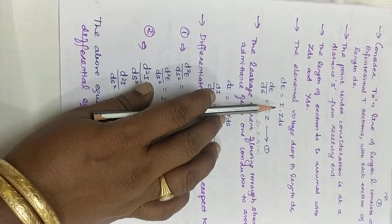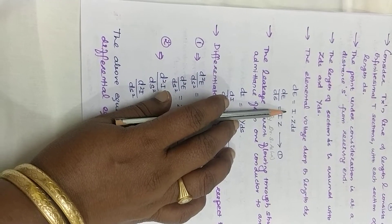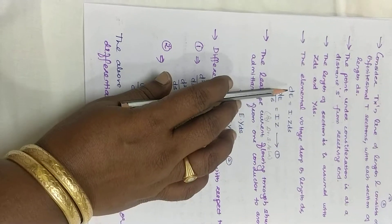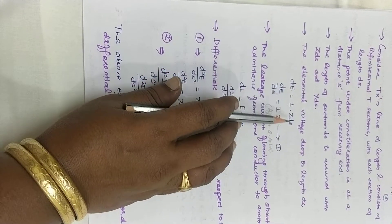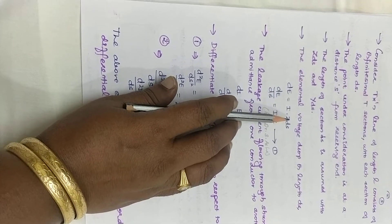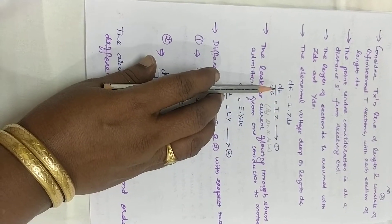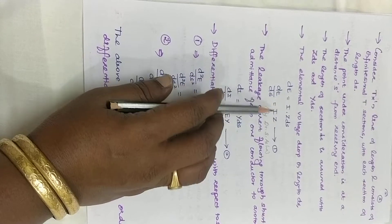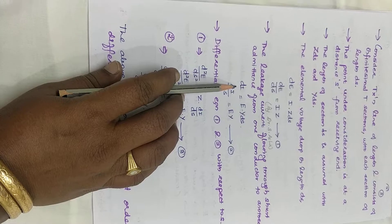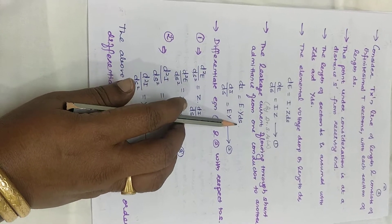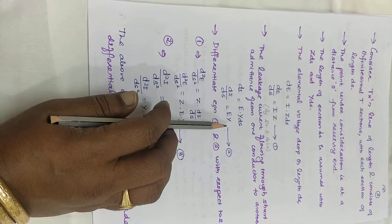In the T section, the elemental voltage drop is dE equal to I·Z·dS. This comes from the basic equation of Ohm's law — V equal to IR — with R replaced by Z representation. So dE equal to I·Z·dS, giving dE/dS equal to IZ. The leakage current flowing through the shunt admittance is written as dI equal to E·Y·dS, which can be rewritten as dI/dS equal to EY.